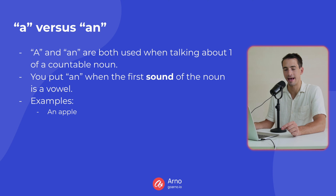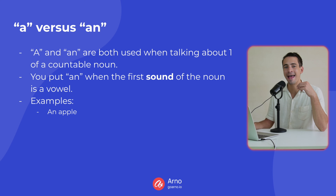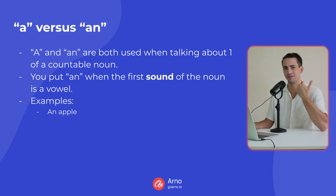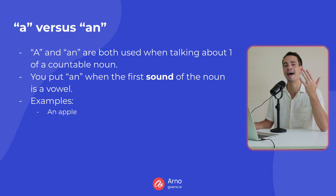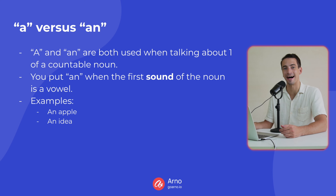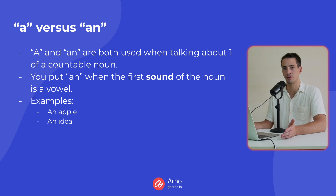For example, 'an apple' — the first sound of apple is a vowel sound, so 'an apple' is easier to say than 'a apple.' See how you have to kind of cut your voice with 'a apple'? It doesn't sound very nice. It's much more fluid to say 'an apple.' Or 'an idea' — 'I' is a vowel sound. 'An idea' sounds much better than 'a idea.'